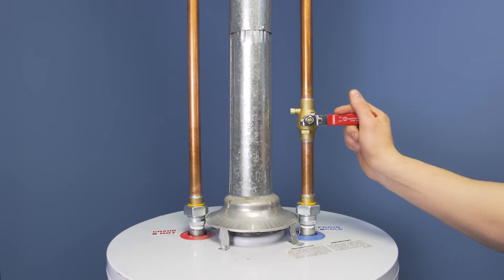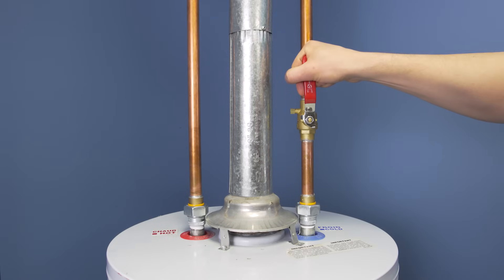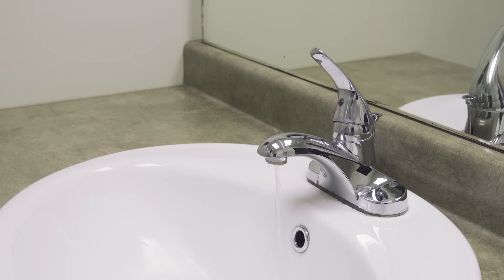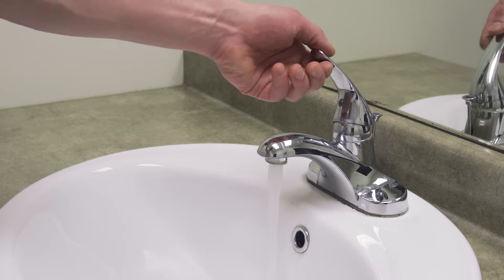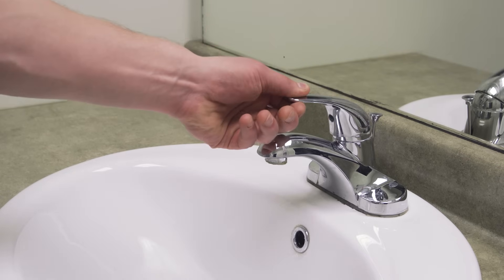Now open the cold water supply to fill the tank. Check the faucet. You should hear the air being pushed out of the system. Close the faucet once you get a smooth stream of water. This will tell you that the tank is full and the air has been removed.